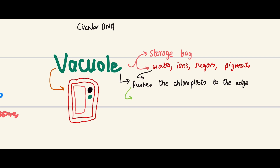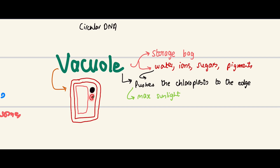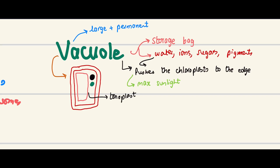The reason it's important that the vacuole pushes chloroplasts to the edge is that this allows the chloroplasts to receive the maximum amount of sunlight. As sunlight penetrates through plant tissue, its intensity reduces, so having chloroplasts at the periphery maximizes light absorption. In a plant cell, the vacuole is large and permanent — it stays as one vacuole.